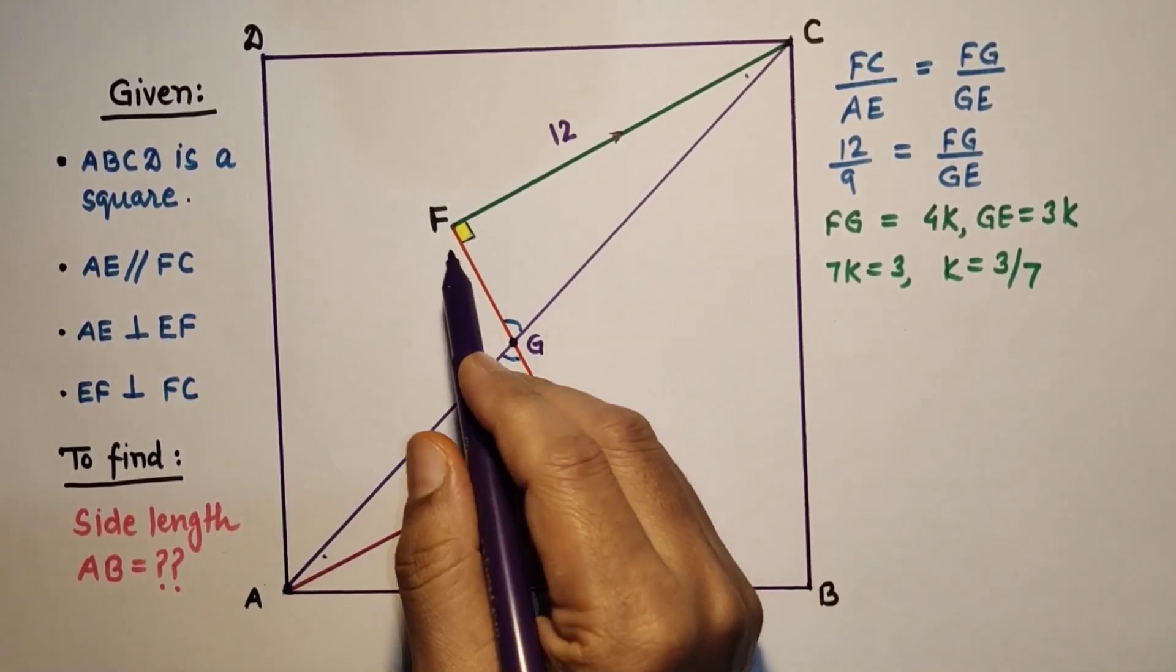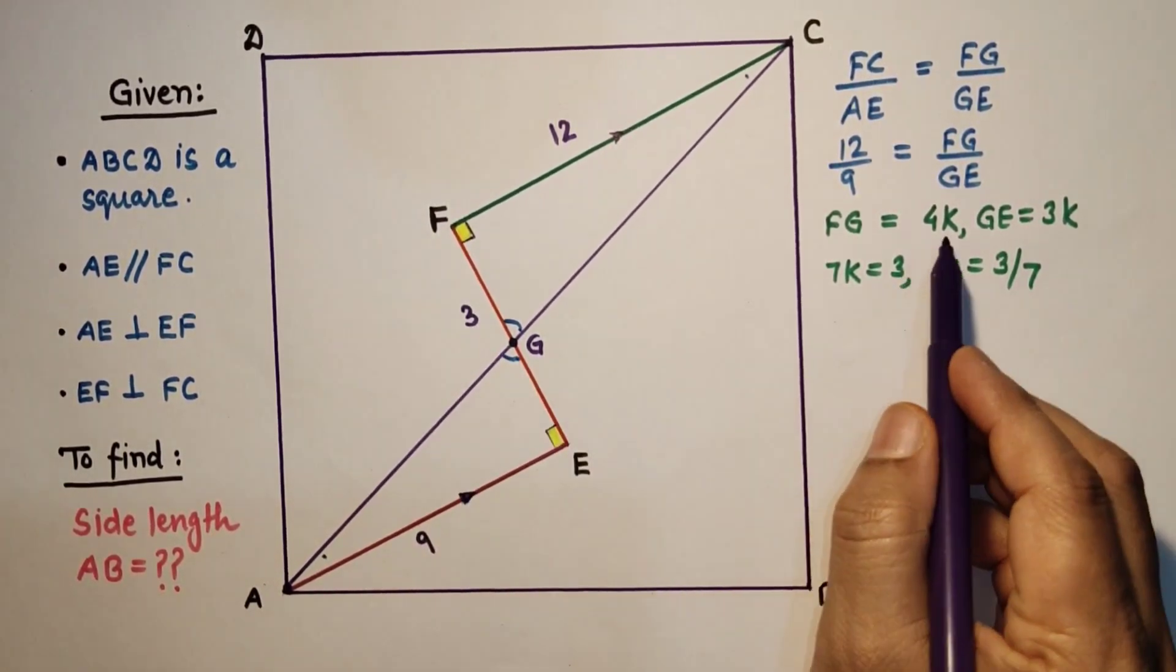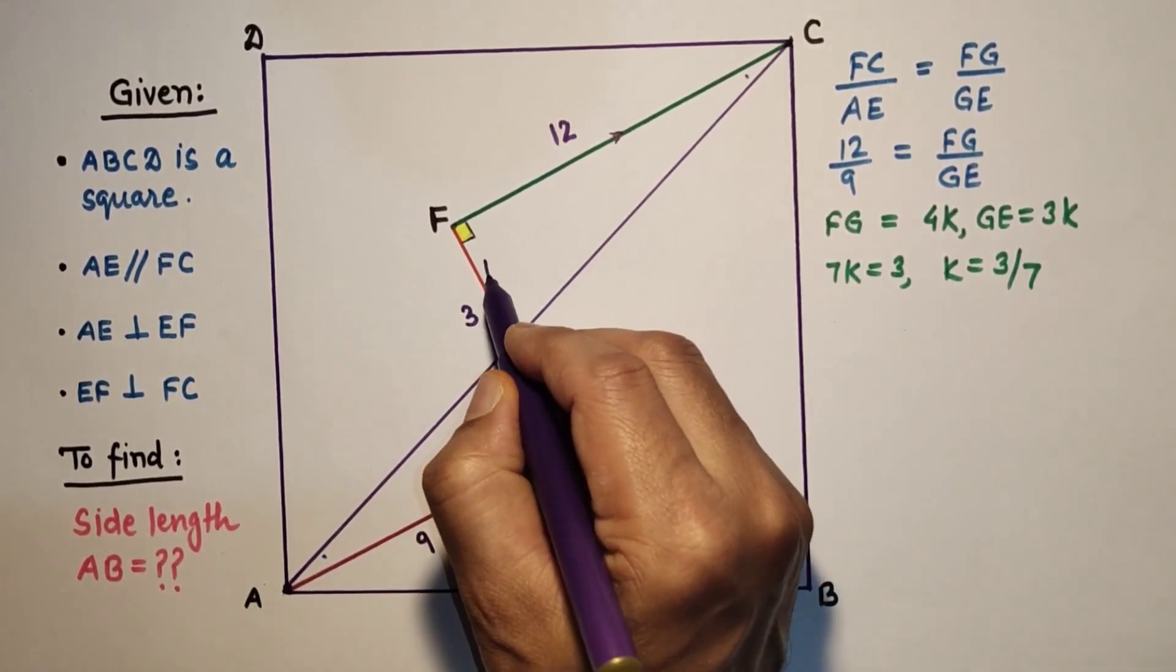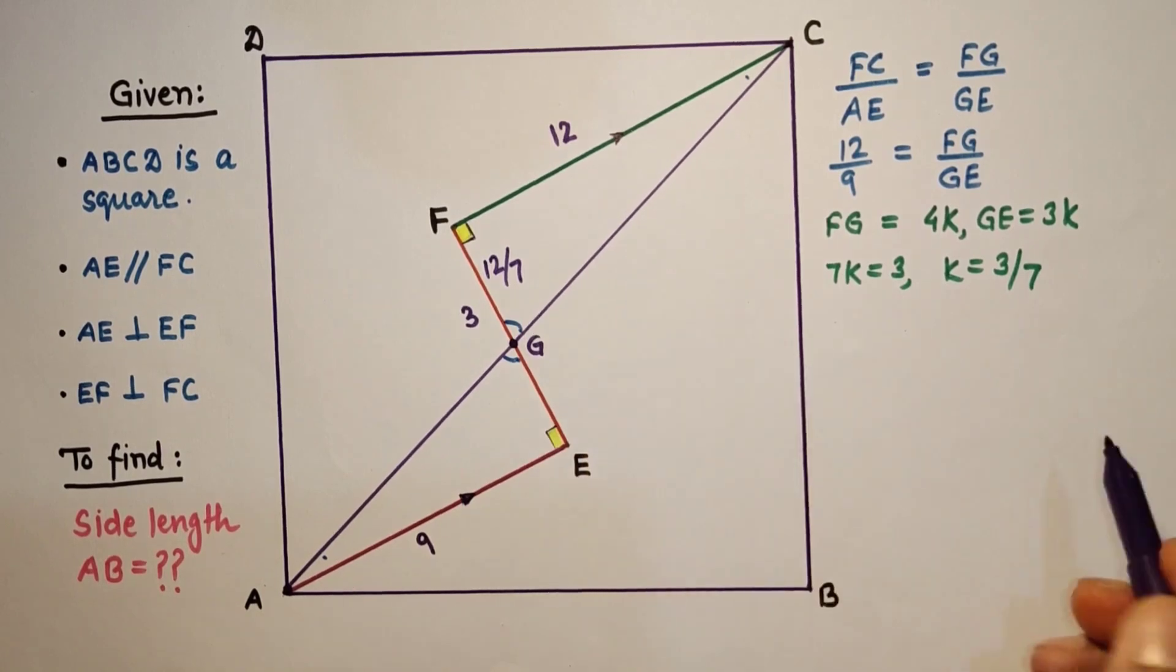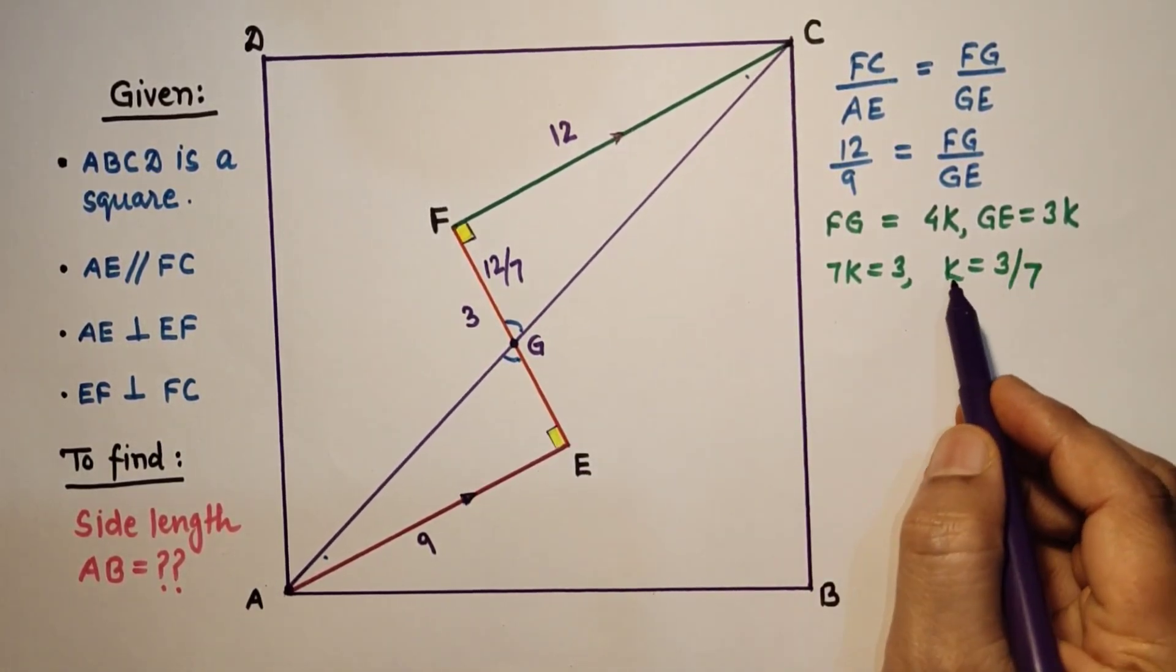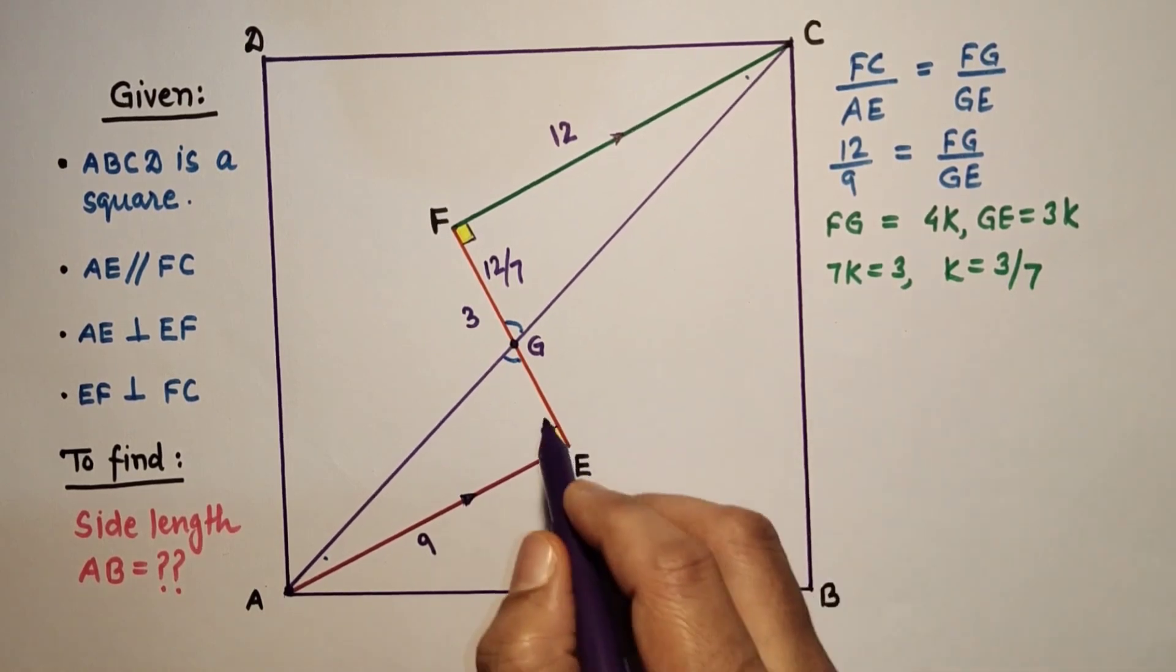Now this FG is equal to 4K, so 4 into 3 by 7, so this is 12 by 7. And this GE is equal to 3K, and 3K means 3 into 3 by 7, 9 by 7.